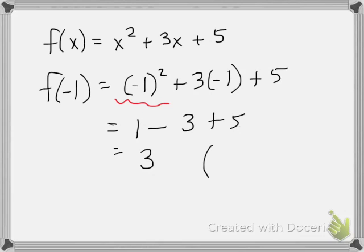Again, this gives me the ordered pair of when I plug in a negative 1 for x, I get a 3 for y. This is an ordered pair.